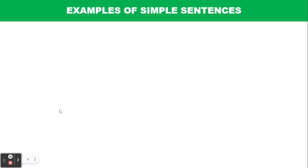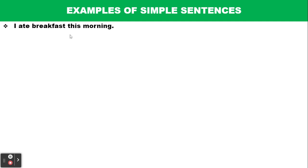Now let's look at examples of simple sentences. 'I ate breakfast this morning.' When you look at this simple sentence you will discover some of the characteristics we talked about. You have the subject 'I,' then the verb 'ate,' then 'breakfast' is the object, and 'this morning' is the adjunct. In the traditional grammatical method, we can divide the sentence into two parts: subject and predicate. The subject is 'I'; 'ate breakfast this morning' is the predicate.